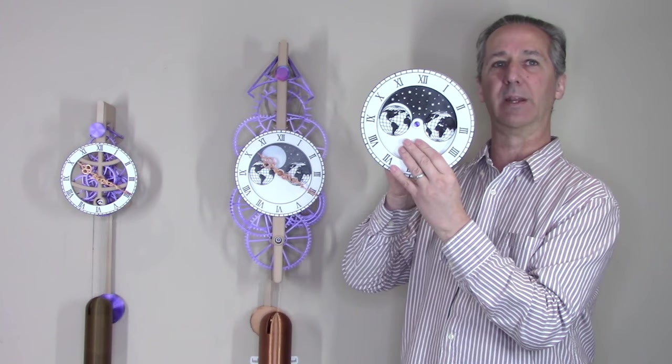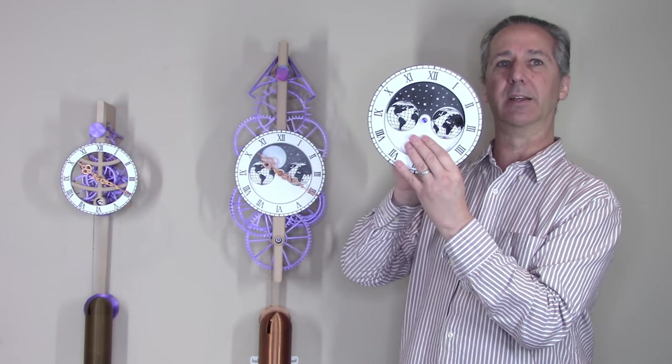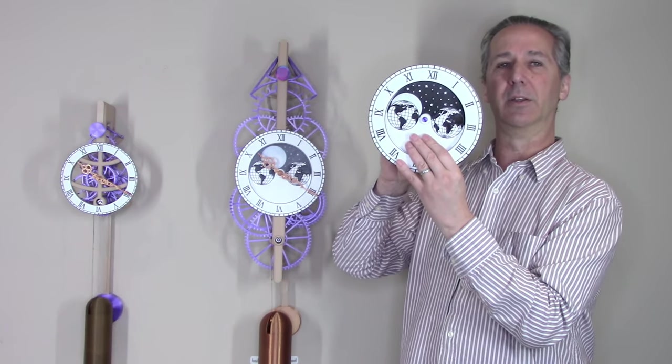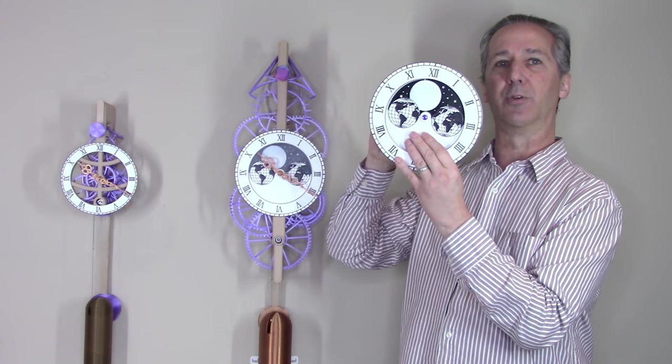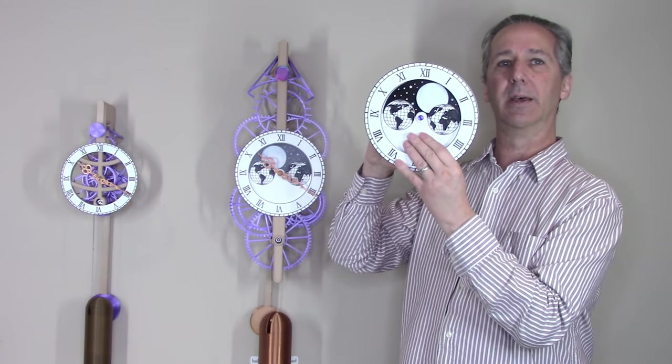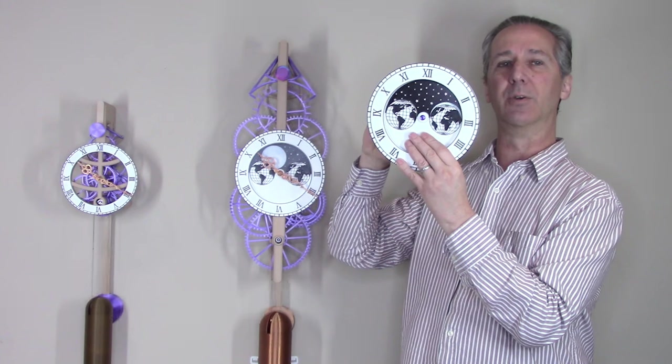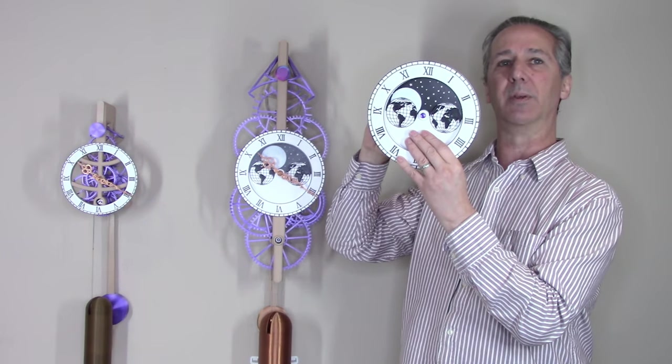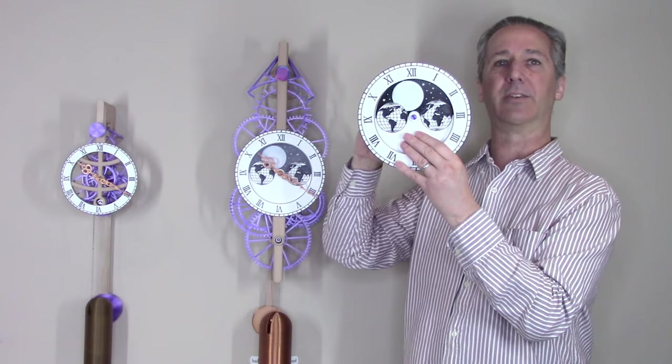As the moon rotates through a 29 and a half day cycle, it changes from a new moon to a full moon and back to the next new moon. And then the hidden moon comes up showing the next cycle.